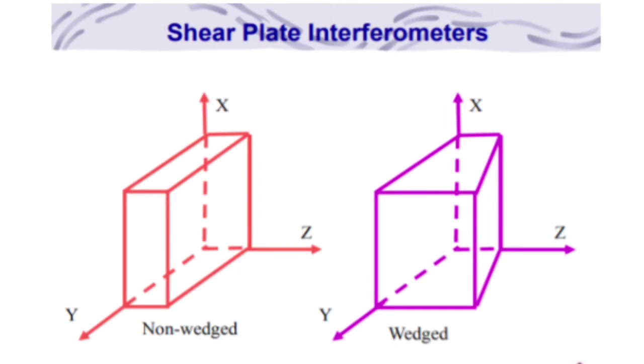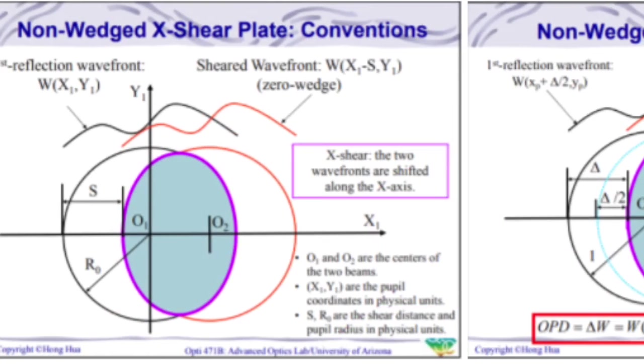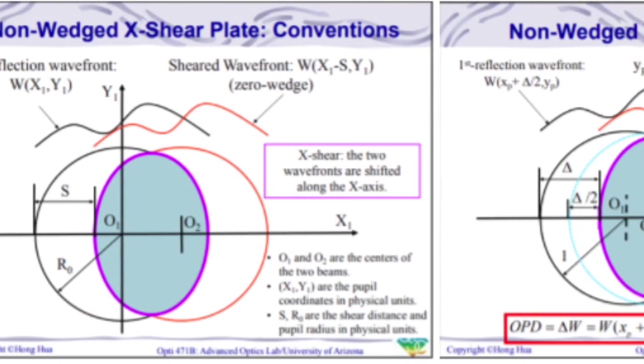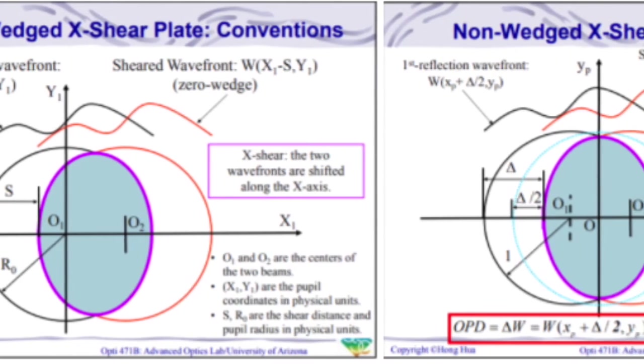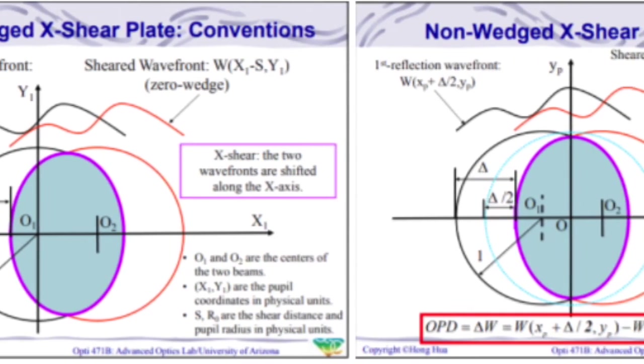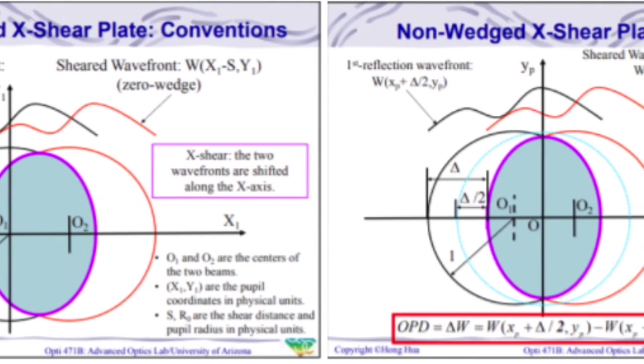There are two types of shear plate interferometers, wedged and non-wedged. In a shear plate, there are two reflected wavefronts that have an overlapping field in which fringes are available for collimating light passing through it. The shear is dependent on the refractive index of the flat, the thickness of the plate, and the incidence angle of the beams on the surface of the flat. This is an illustration that shows the wavefront difference in the first reflected wavefront and the sheared wavefront. As it is shown, there is only a portion of the two beams that overlap due to the shear distance, S.